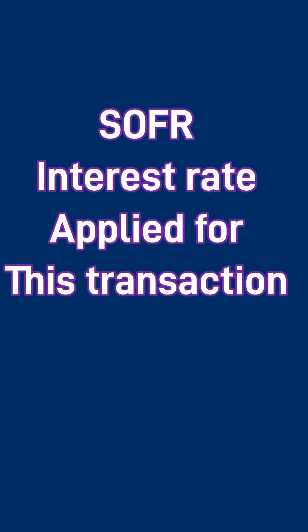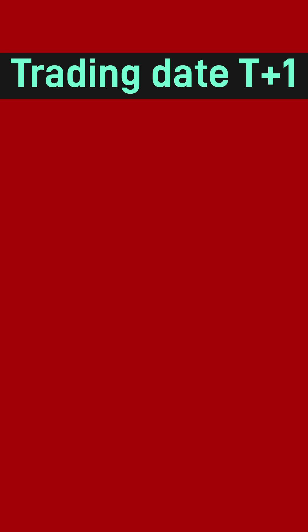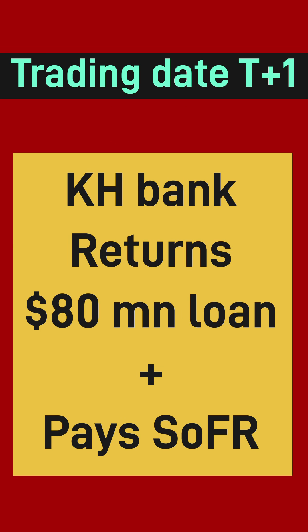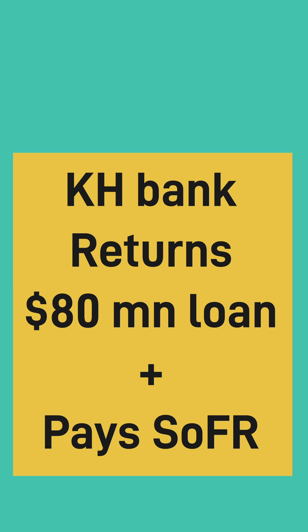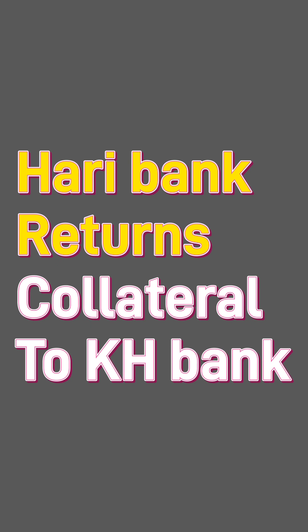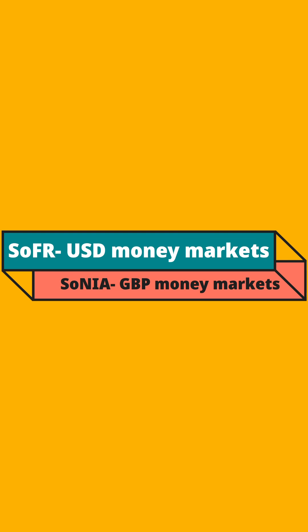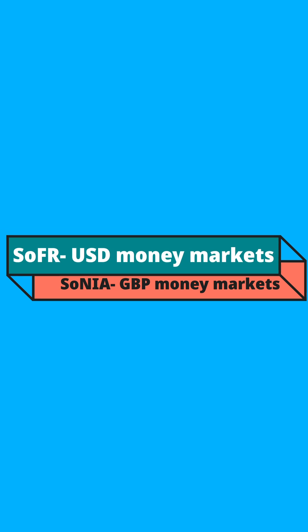The SOFR interest rate is then applied for this transaction and used to calculate the coupon that KH Bank must pay once they return the loan. On trading day T+1, Hardy Bank returns the collateral to KH Bank, and KH Bank pays back the principal plus the interest.